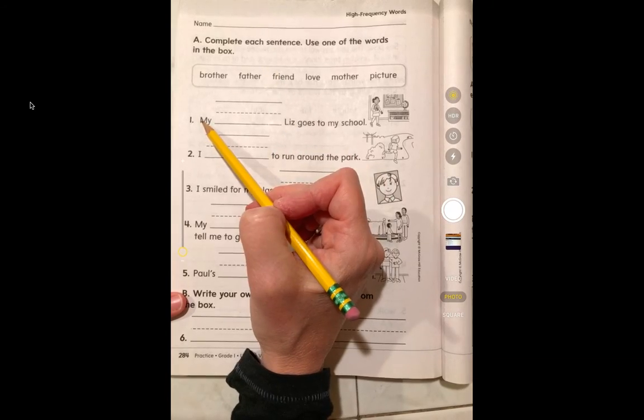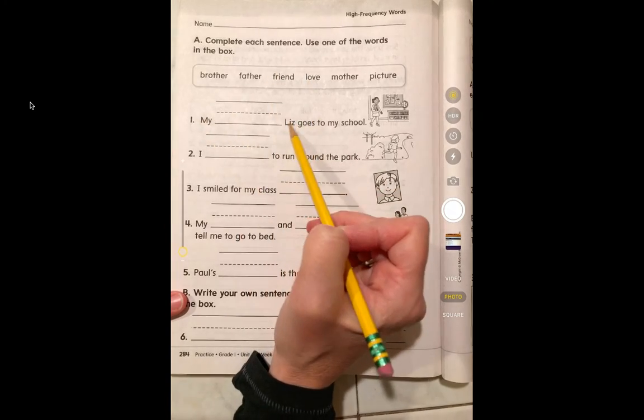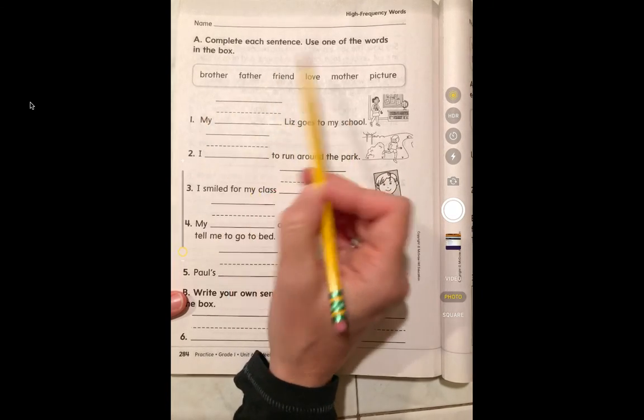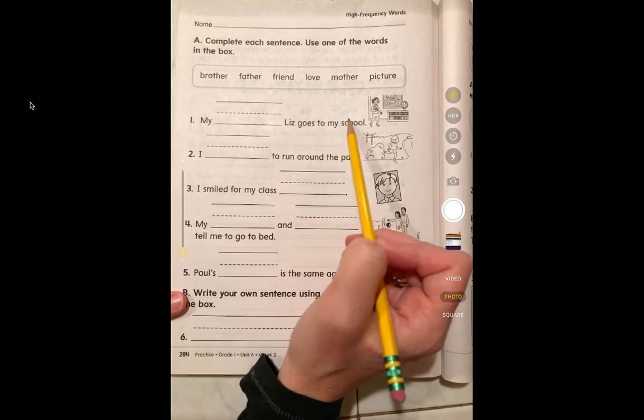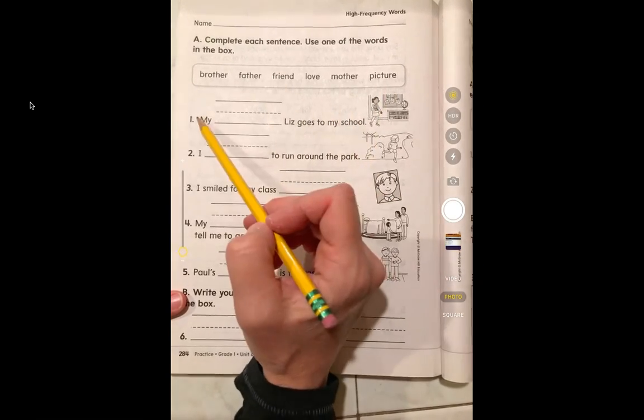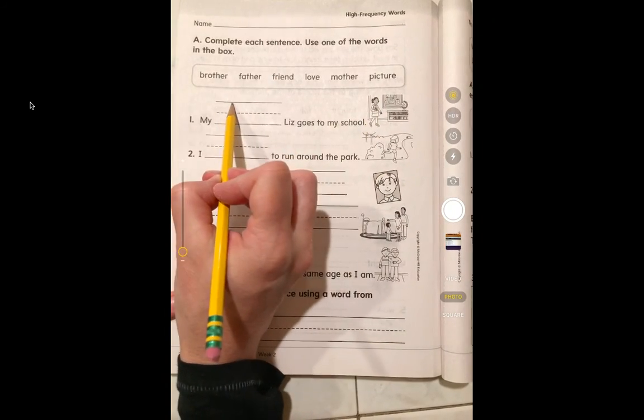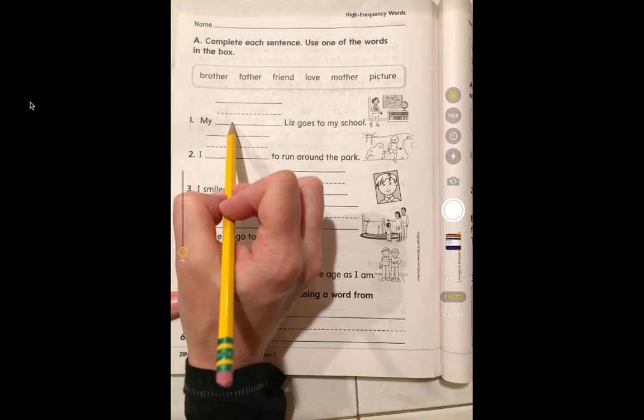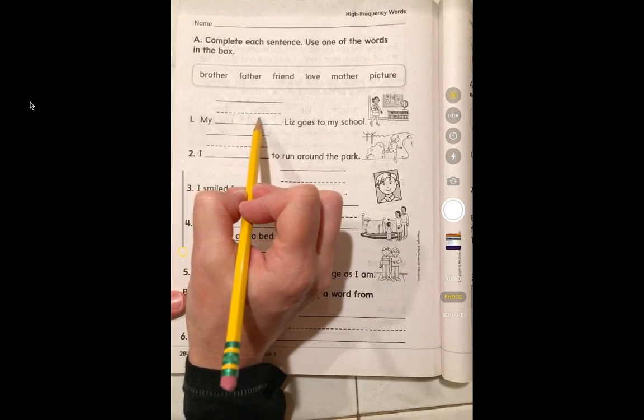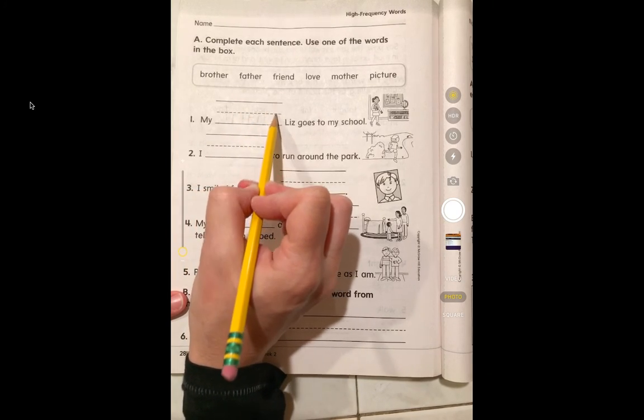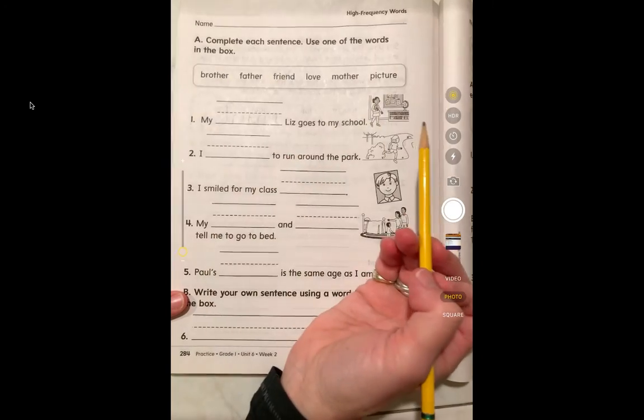I would have you go on and check. My love Liz goes to my school? Doesn't make sense. My mother Liz goes to my school? Doesn't really make sense. My picture Liz goes to my school? The one that makes the most sense is friend. So you would then write friend in there and you could cross it off at the top.